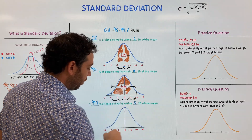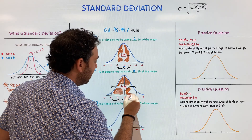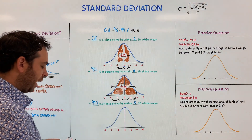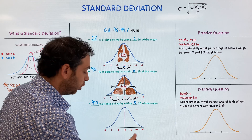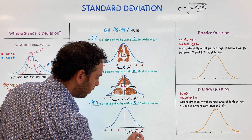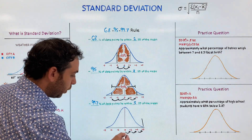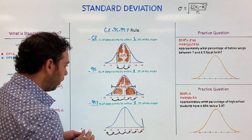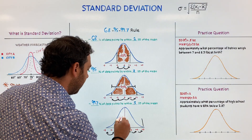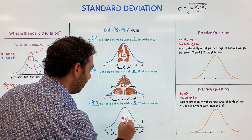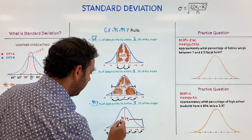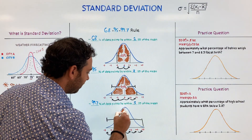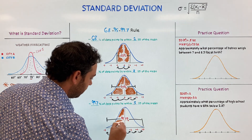What would 99.7% lying within three standard deviations of the mean look like? Our mean is right in the middle. We go one, two, three to the right — and absolutely one, two, three to the left. So what this is showing us is that 99.7% — basically everybody — of the data falls within three standard deviations of the mean. Three standard deviations covers basically all of the data.